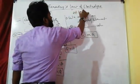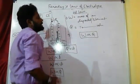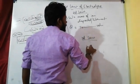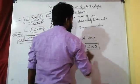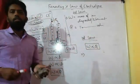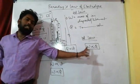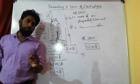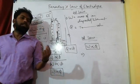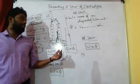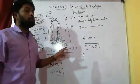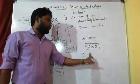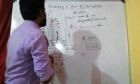According to Faraday's first law of electrolysis: the weight of the ion deposited or liberated at the electrodes is directly proportional to the total charge — or quantity of electricity — passed in the solution. That is, W ∝ Q.